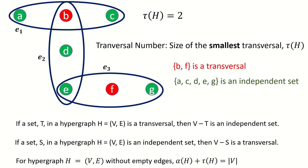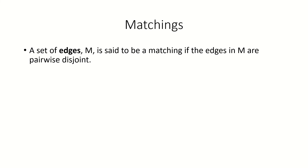This brings us to our first relationship between different hypergraph parameters. For hypergraphs without empty edges, the sum of the independence number with the transversal number equals the number of vertices in the hypergraph. Moving on, a set of edges M in a hypergraph is said to be a matching if the edges in M are disjoint.